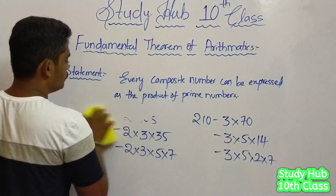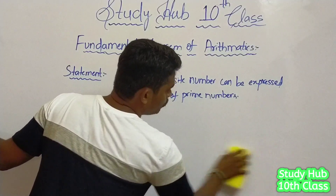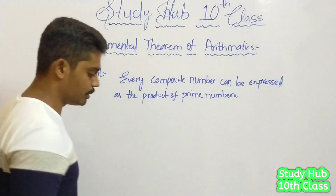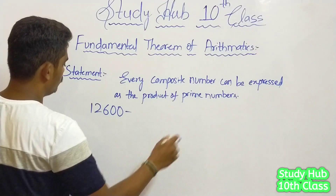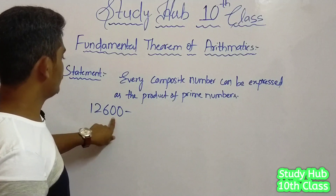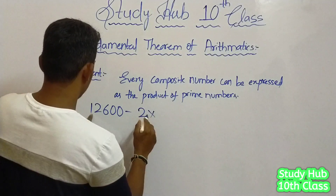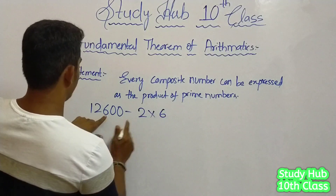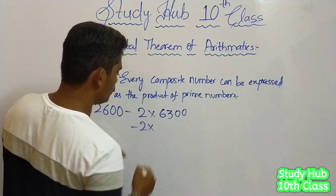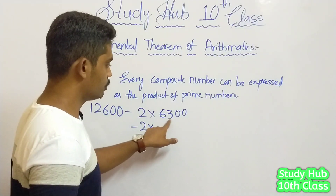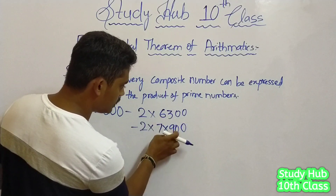Let us take a bigger example, because there is one more small concept in this theorem I want to explain. Let us take the example of 1260. When I see 1260, I understand it is easily divisible by 2. So 2 into 630, and 630 into 2 into 315. So we can write 2 into 2 into 315, which is 2 into 2 into 7 into 9, then further 7 into 63.